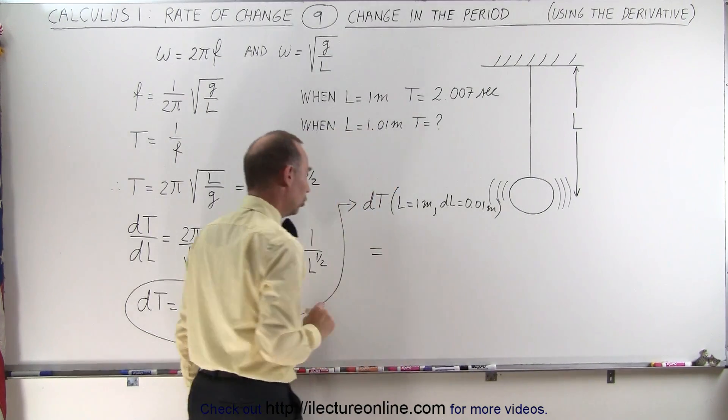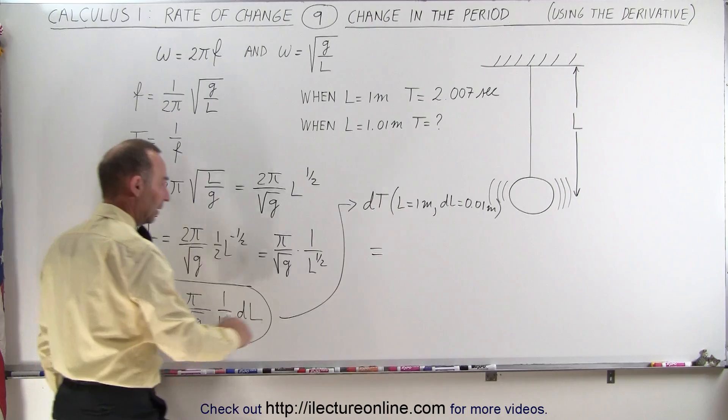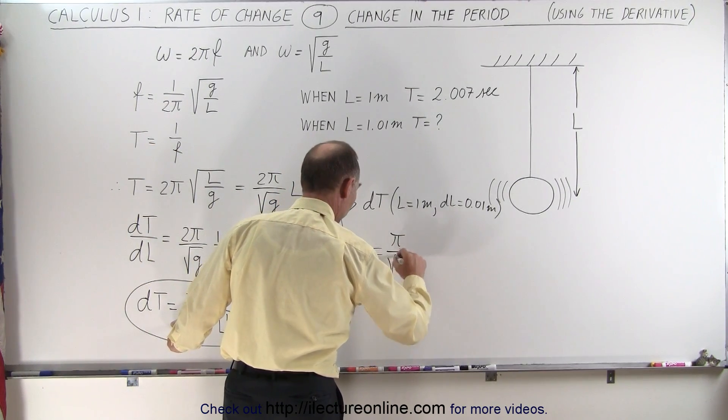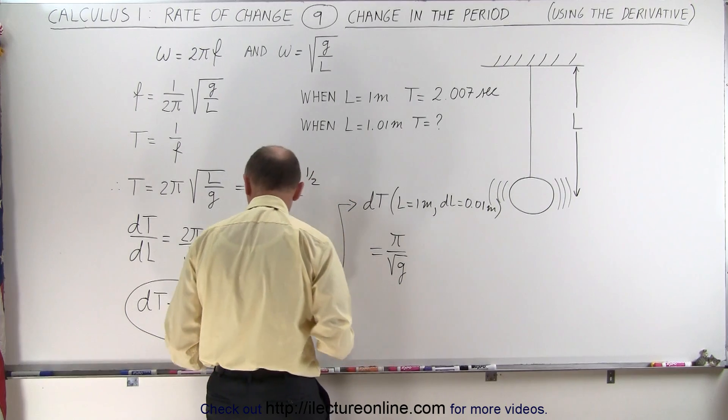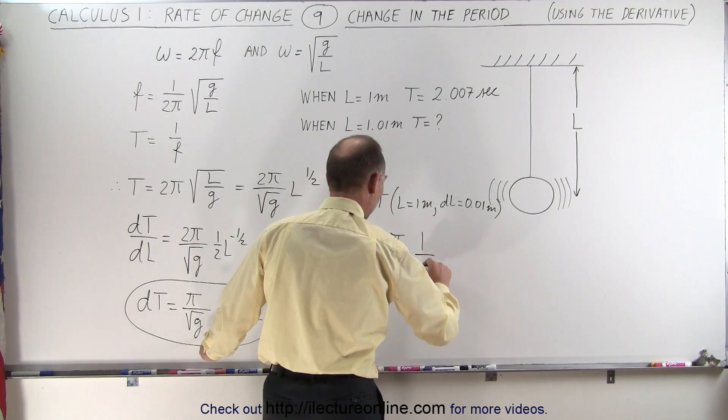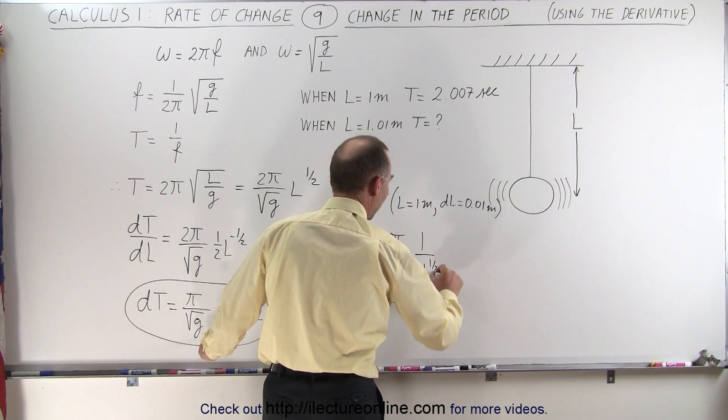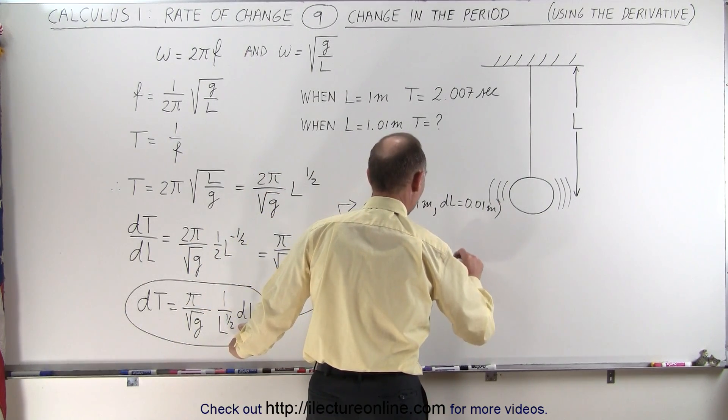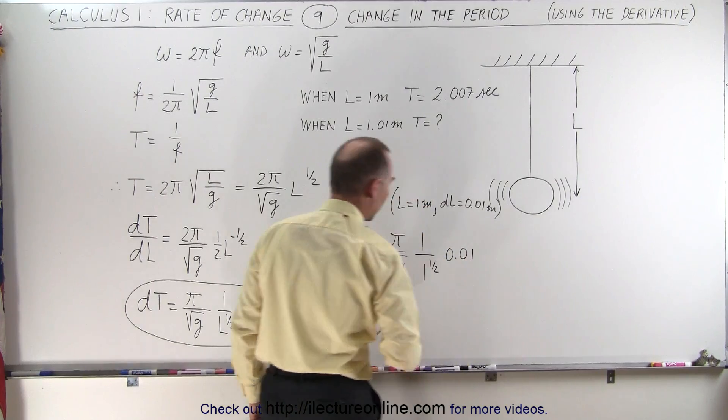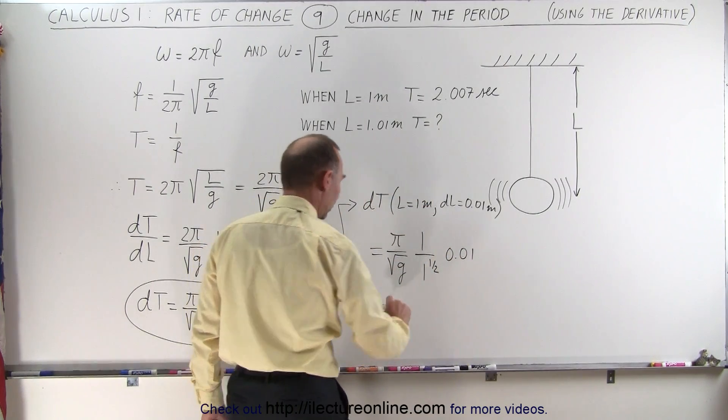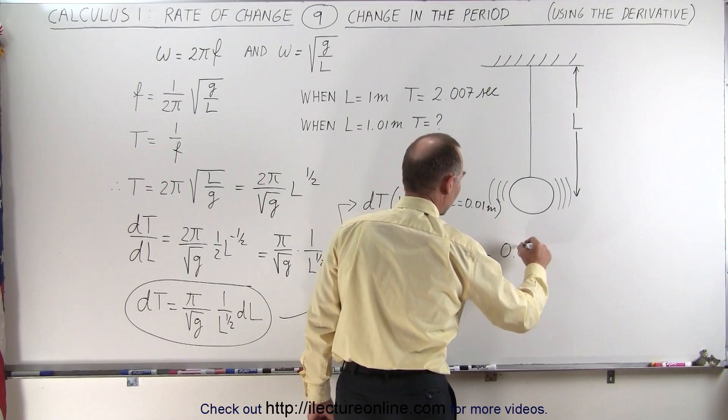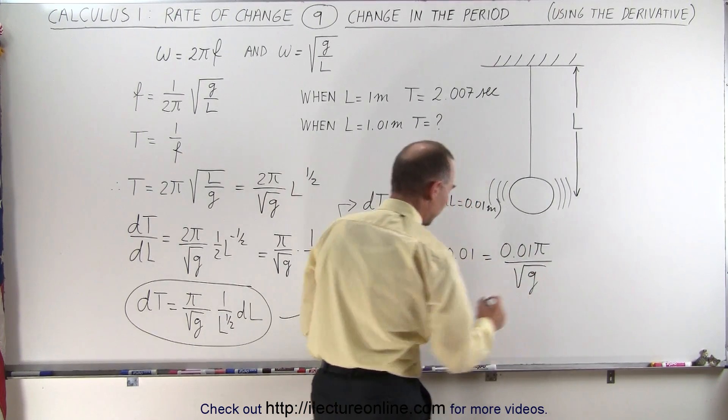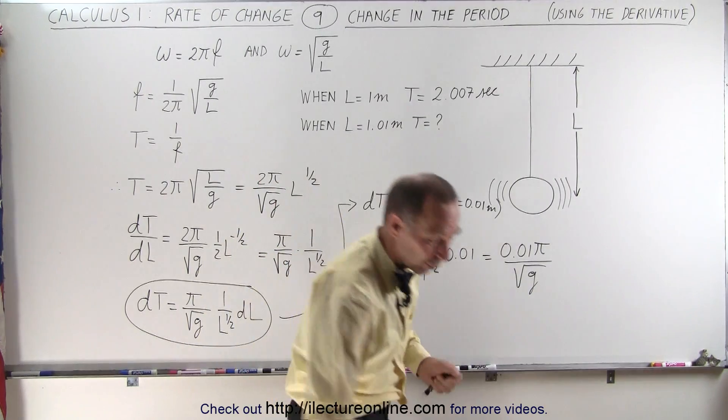And so that is going to be equal to, plug in, we have the π divided by the square root of g, which is 9.8 in most places, times 1 over, that would be 1 to the 1/2 power, which is still going to be equal to 1, and times dL, which is going to be 0.01. So notice that this is equal to 1, so this would be equal to 0.01π divided by the square root of g.